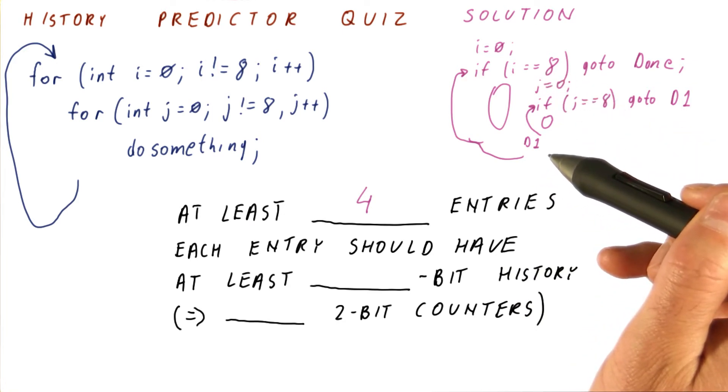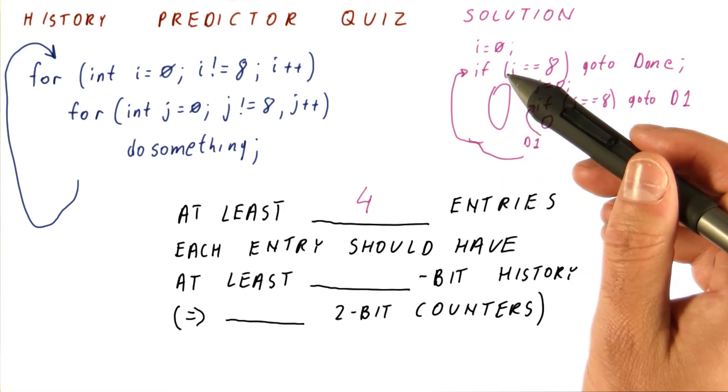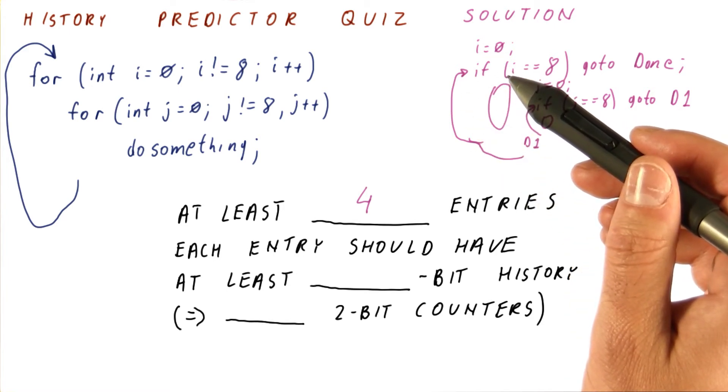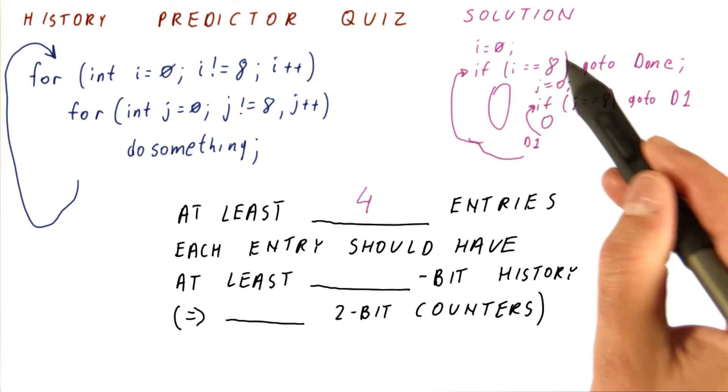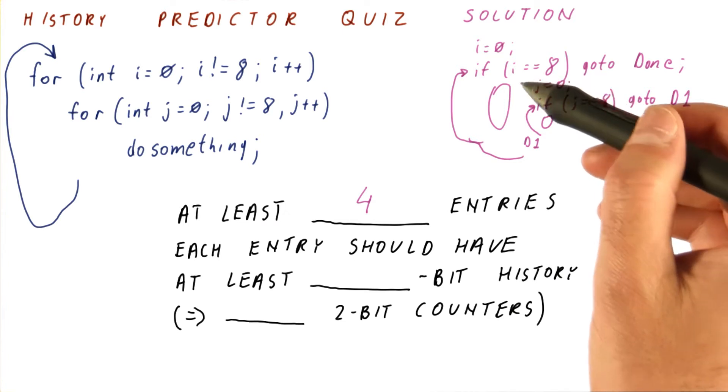In order to do well on all four of these branches, we need to see what is the longest history that any one of them will have. The loop back branch is always taken, so really we don't even need a history for it. Even a single two-bit counter will do well on these two.